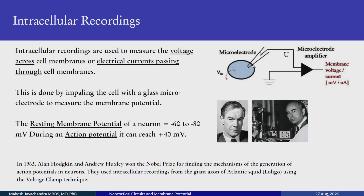When there is activity of the nerve, we call it the action potential, which we will study in depth in a future session. It can reach up to plus 40 millivolts. Alan Hodgkin and Andrew Huxley did a series of seminal experiments in the 1940s and 1950s where they developed new techniques to find out the mechanism of generation of the action potential. For this they won the Nobel Prize in 1963.